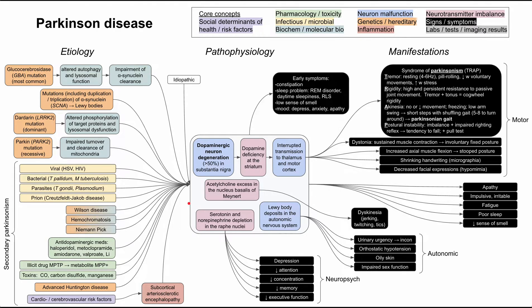This is a mechanism of disease map for Parkinson's disease. I'll be talking about the etiologies, the pathophysiology, and the manifestations of Parkinson's disease, as well as other causes of Parkinsonism. The core concepts are color-coded according to the legend. This is the last time we'll have everything up on the slide, so go ahead and take a screenshot if you want. I'll be clearing it and talking about everything one by one.